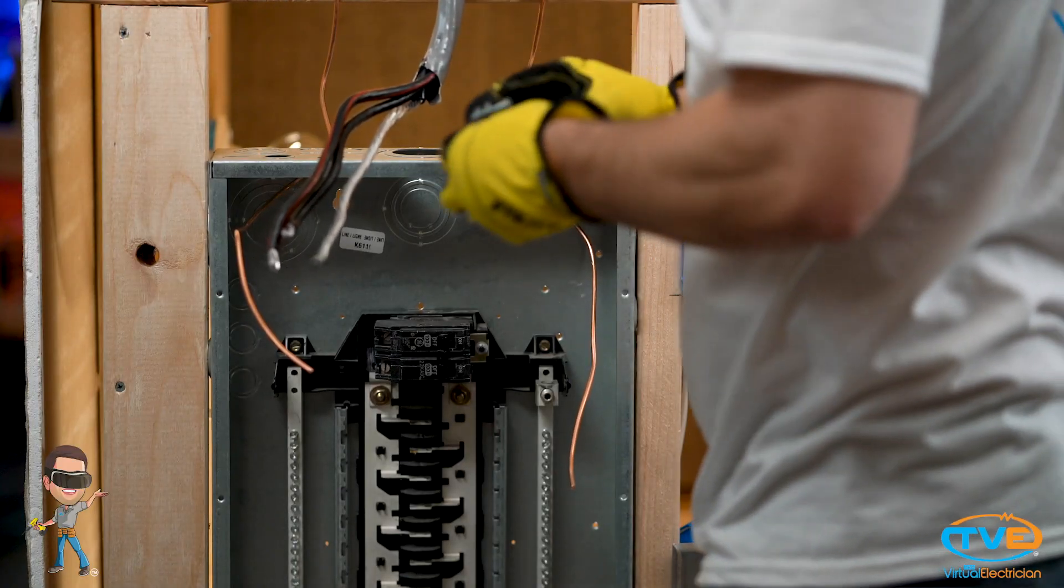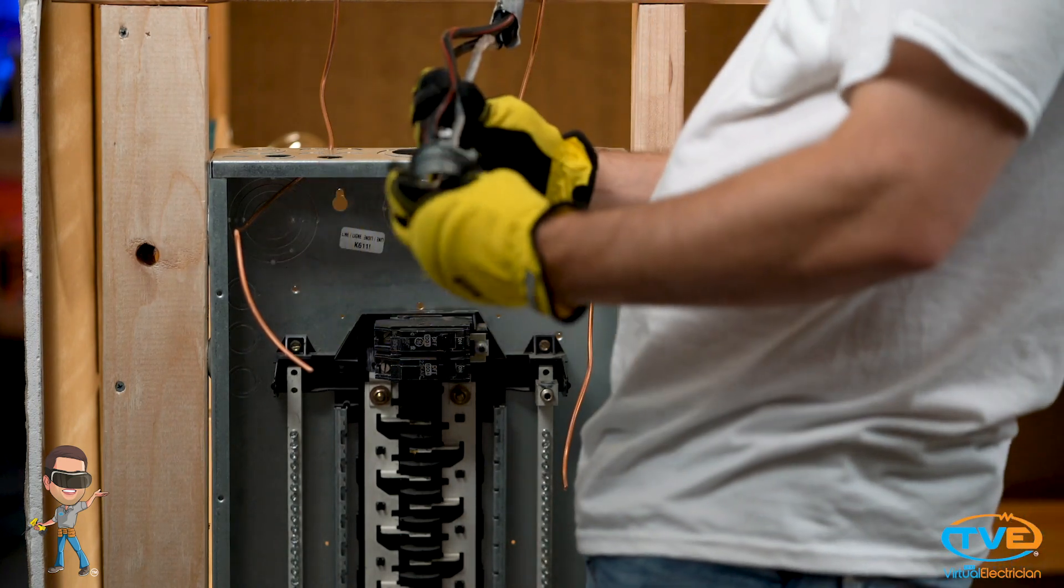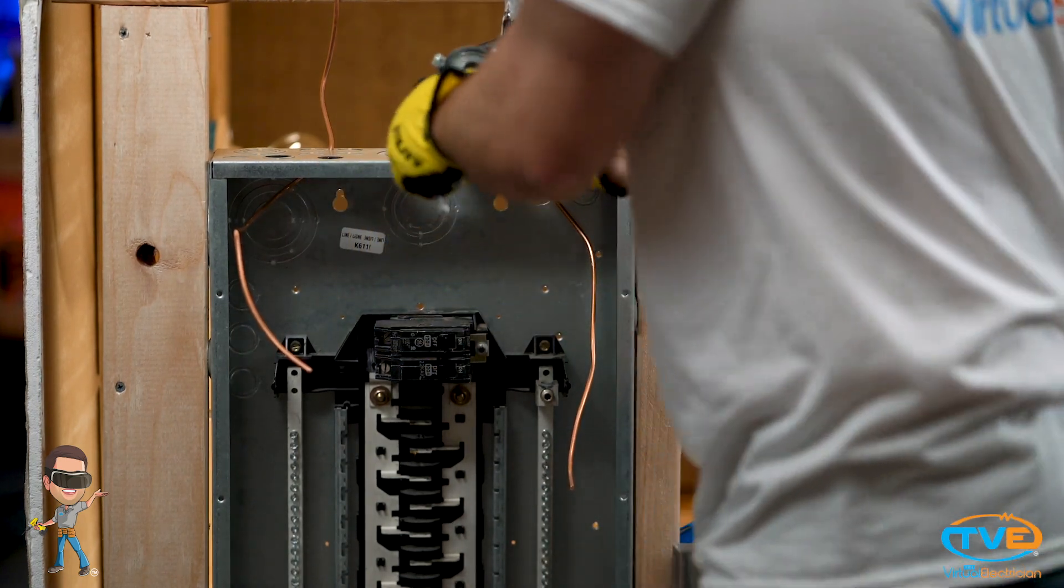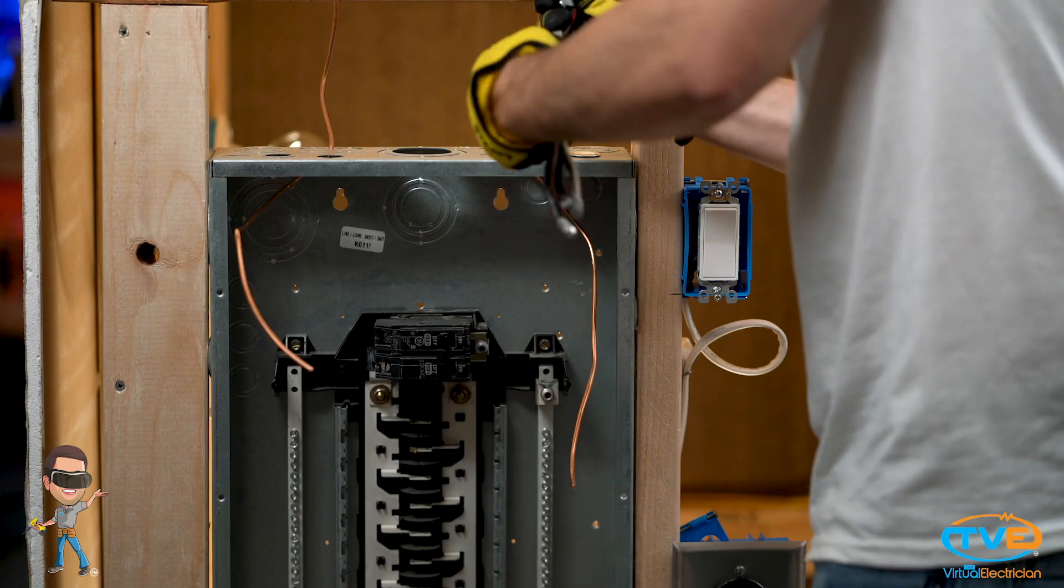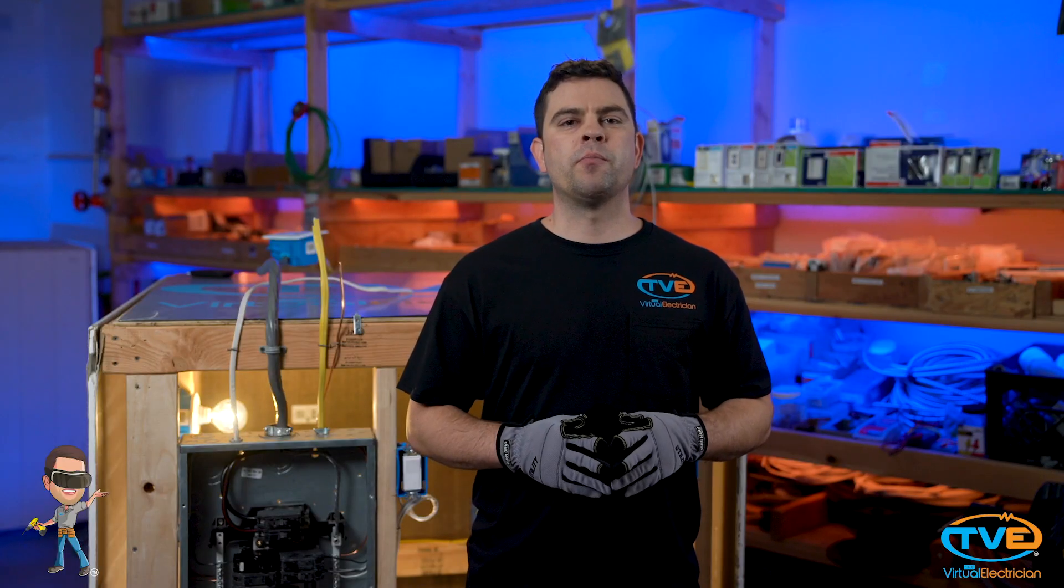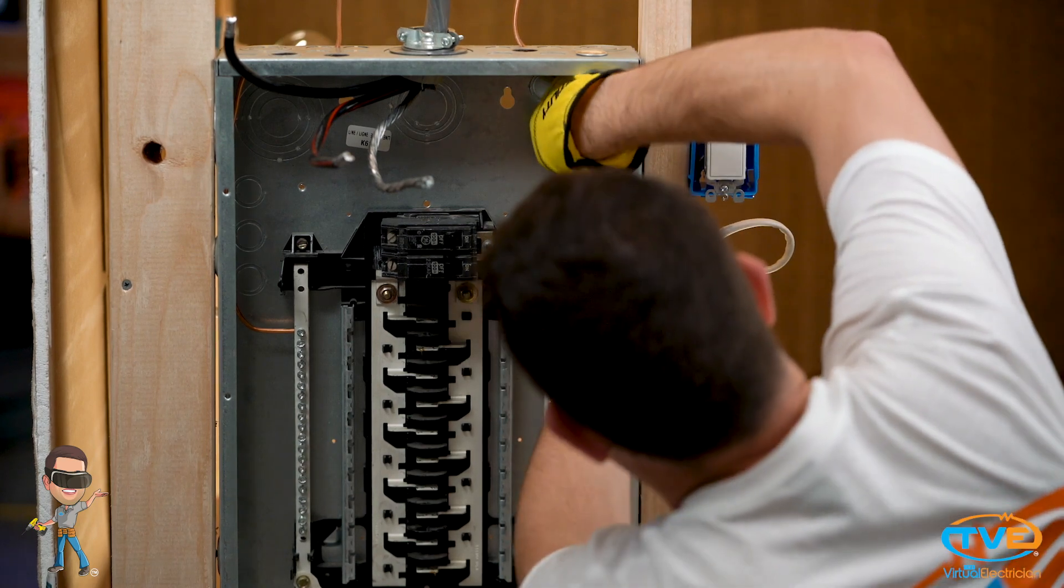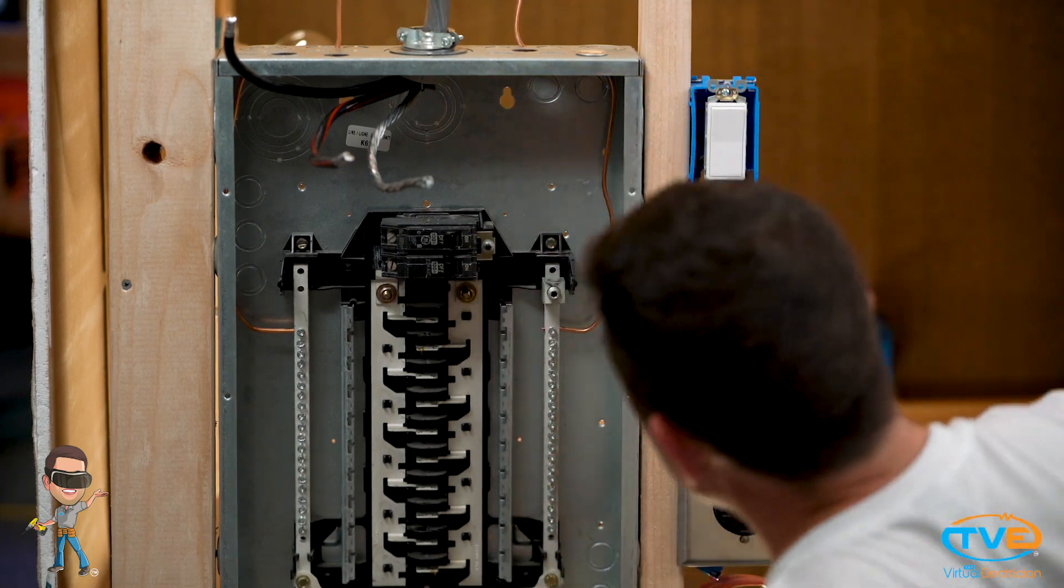Remove the main knockout and insert the main service conductors into the new panel and screw the panel into the studs. Install plastic bushing over main service conductor connector. Insert the ground wires through the two smallest holes on top of your panel.